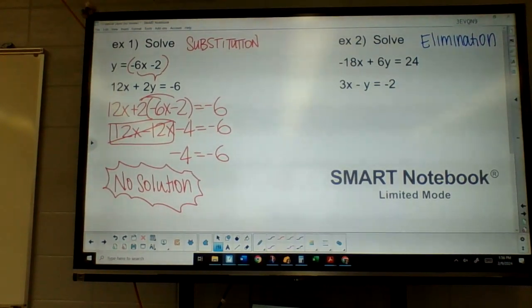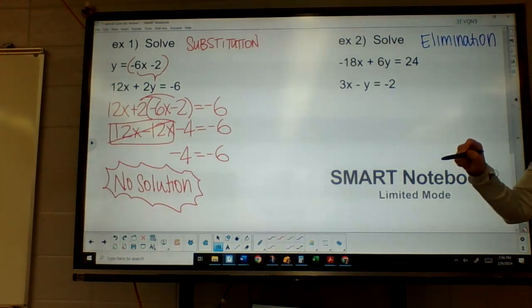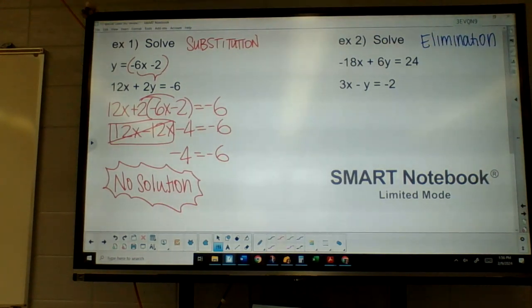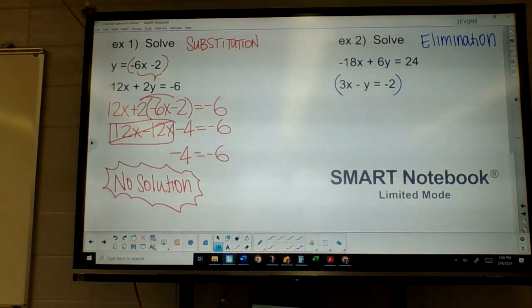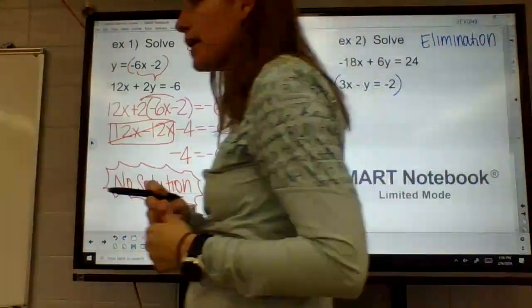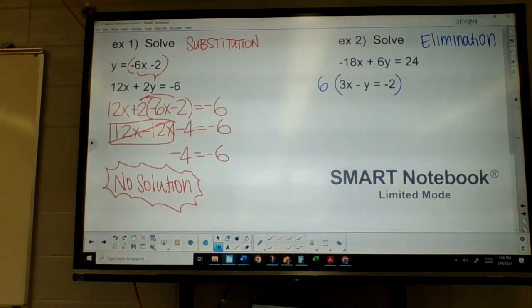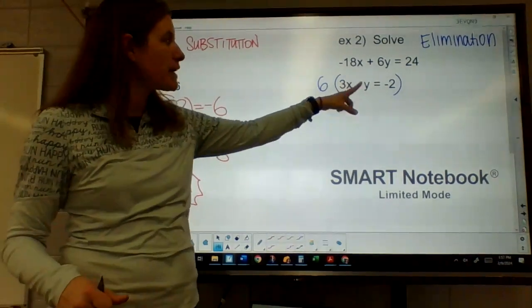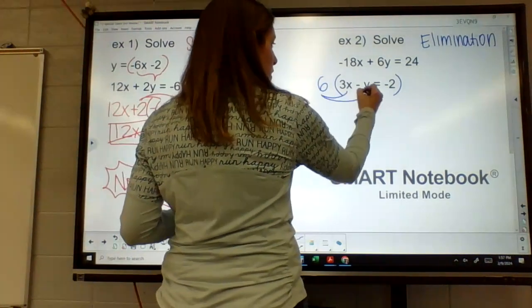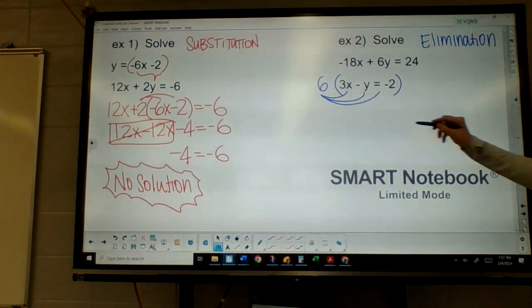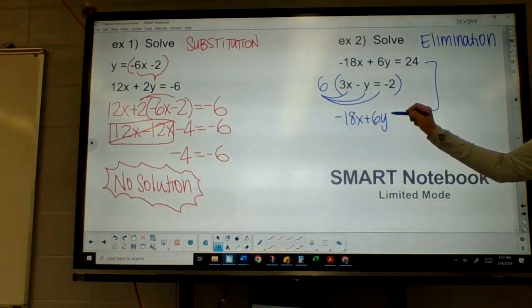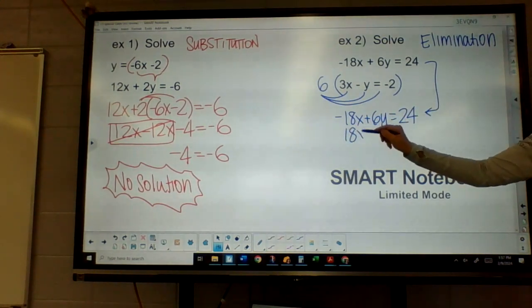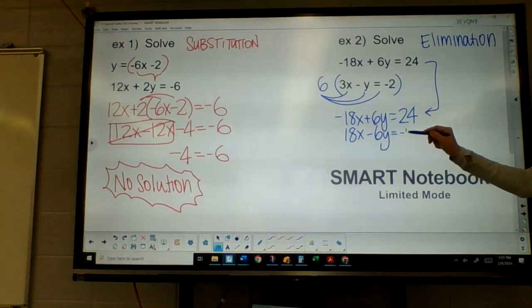Any thoughts on what we could do? Yeah, the bottom equation. Bottom one by what? 6. You think 6? Yeah. I think 6 would be good. So we're going to multiply the bottom row by 6. Now the reason we're multiplying by 6 is because that actually makes both of these match. And again, another unique problem here. So I'm going to rewrite this top one. So the bottom's going to become a positive 18x. This one's going to become a negative 6y. And then we're going to get a negative 12.